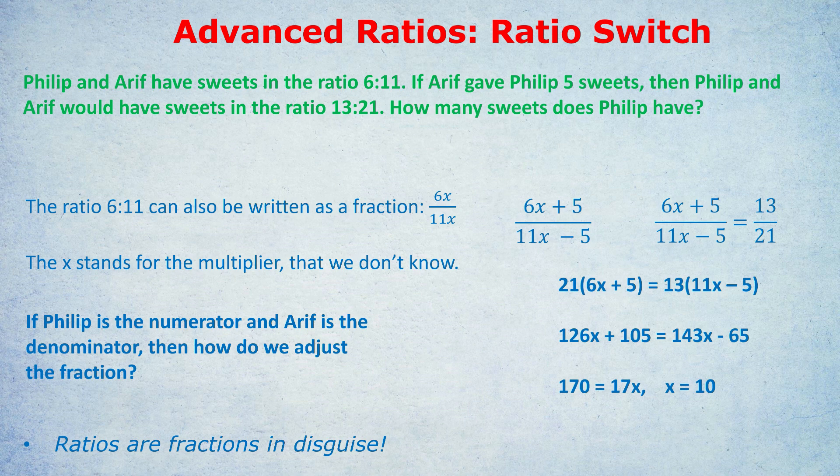Now the focus of this video was more on advanced ratios and this ratio switch technique, not so much on solving equations, but I hope that at least gives you a glimpse about how to solve these kinds of equations. I've got other videos on solving equations, so do check them out if this seems quite advanced. Anyway, the answer isn't x equals 10. What have we actually done? We've found the hidden multiplier. If x is 10, let's go back to that very start of the question where we wrote 6x over 11x. That was the starting ratio. If x is 10, that's 60 over 110. In other words, that's the actual amounts that Philip and Arif had. Philip had 60 and Arif had 110. So the answer to the question is 60 because it was asking about Philip.